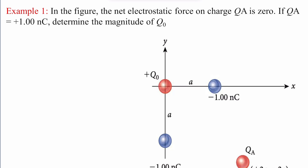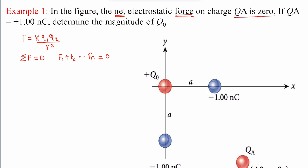Hello friends, in this video I'm going to cover question number one of the writing part of your HEIKEL. Read the question: find the net electrostatic force. The first step — what is the meaning of force? We know the formula F = q1·q2 / r². Net force means summation of all the forces should equal zero: F1 + F2 + ... + Fn = 0.